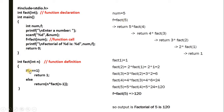With num = 5, f = fact(5). It moves to the function: is 5 == 1? False. So it returns 5 * fact(4). fact(4) returns 4 * fact(3). fact(3) returns 3 * fact(2). fact(2) returns 2 * fact(1). Now n is 1, so 1 == 1 is true, and it returns 1.